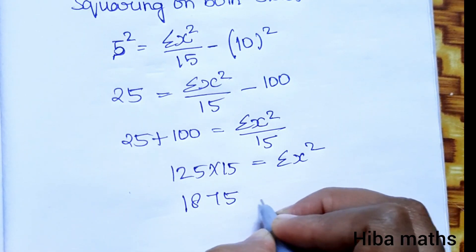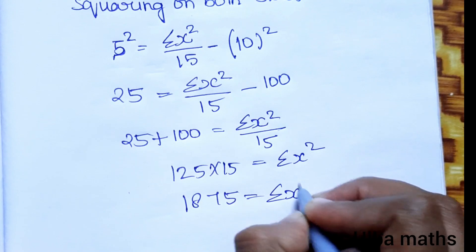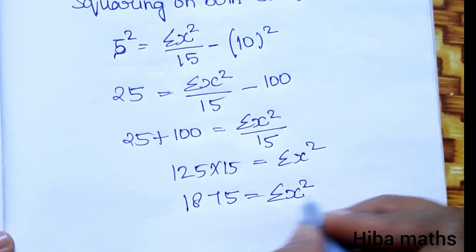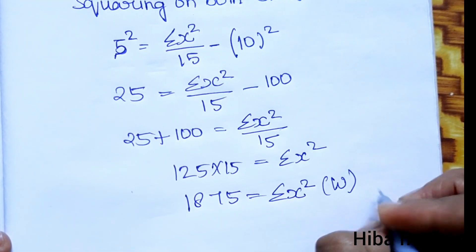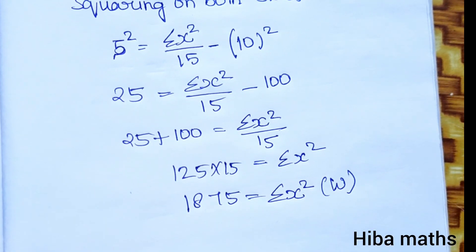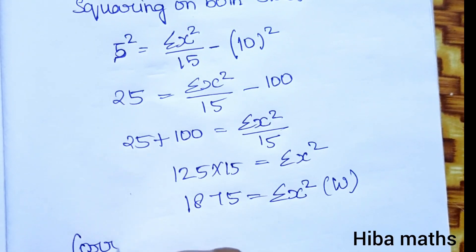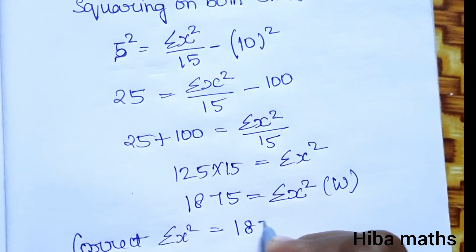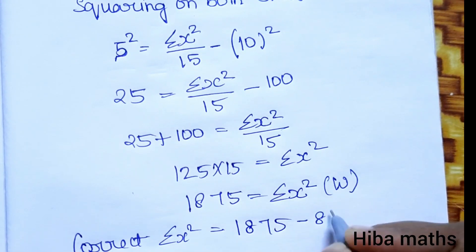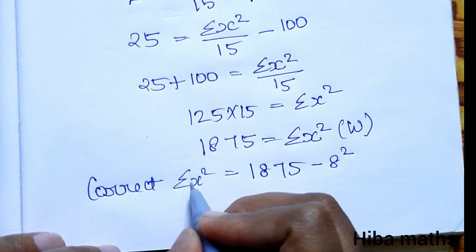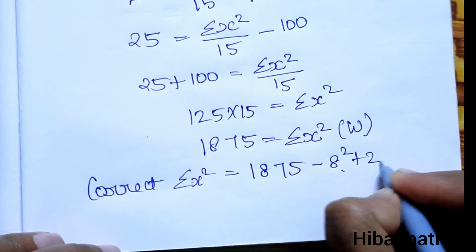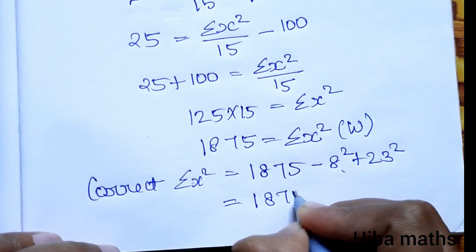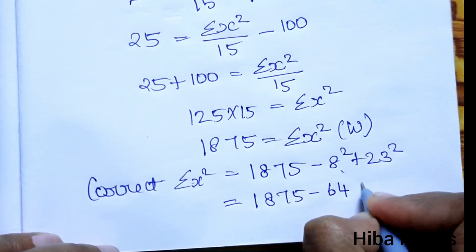So 1875 is the wrong summation of x². Now we correct it by removing the wrong value and adding the correct value: correct summation of x² equals 1875 minus 8 squared plus 23 squared, which equals 1875 minus 64 plus 529, giving the correct summation of x² equal to 2340.